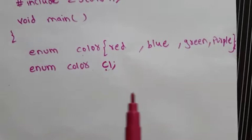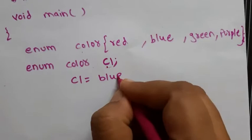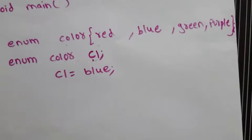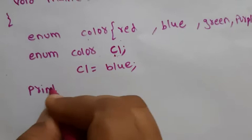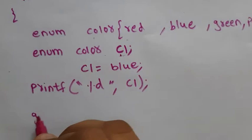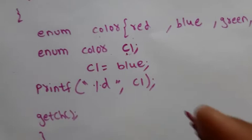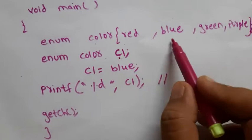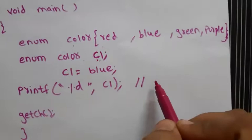I've created my own data type color and a variable c1. Now I can assign a value: c1 = blue. The value you assign must be present in the list — blue is there in the list. Now let's see what happens when we print it: printf with %d and c1. Can you guess what is going to print?